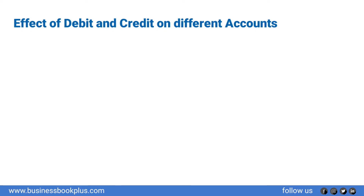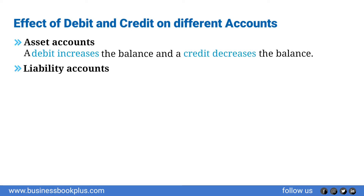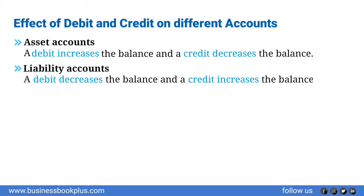The effect of debit and credit on different accounts: For asset accounts, a debit increases the balance and a credit decreases the balance. For liability accounts, a debit decreases the balance and a credit increases the balance.